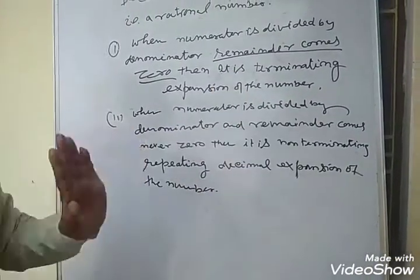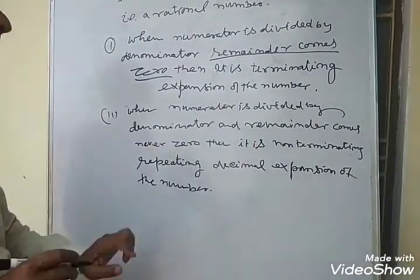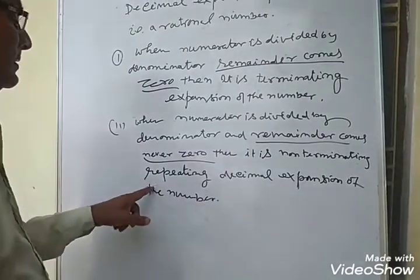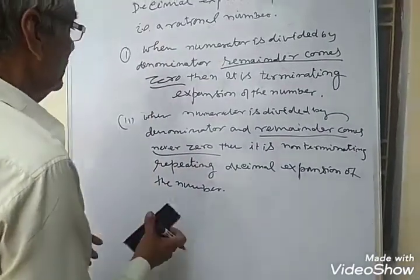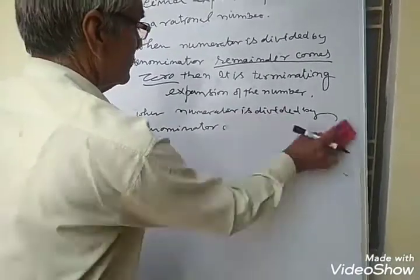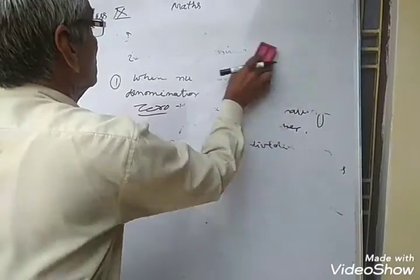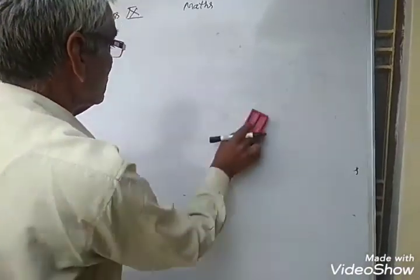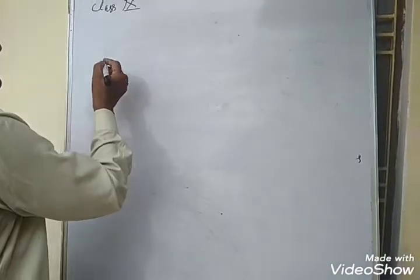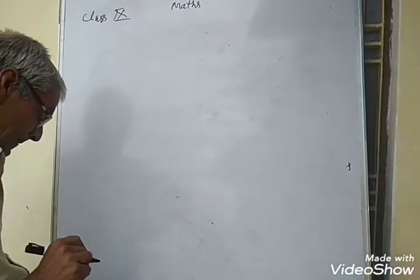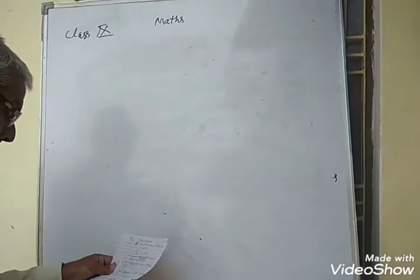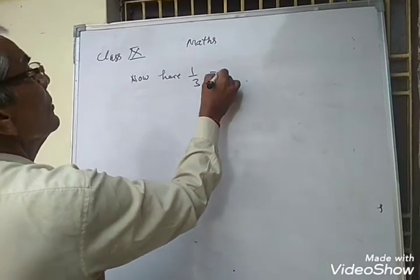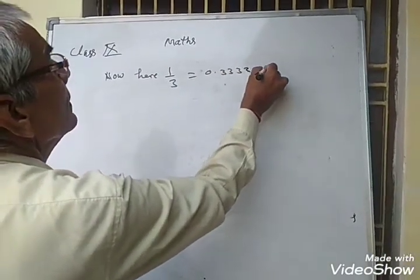If the remainder never comes to 0, then it is a non-terminating repeating decimal expansion. So, let's look at the decimal. Here, 1 by 3 is equal to 0.33333 and so on.